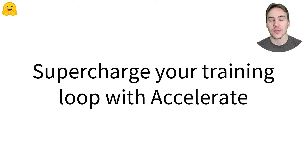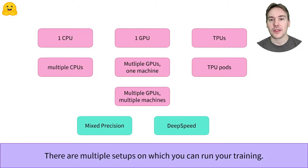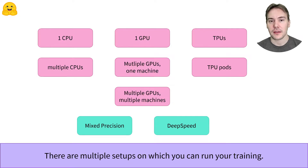Supercharge your PyTorch training loop with Hugging Face Accelerate. There are multiple setups on which you can run your training — it could be on CPUs, GPUs, TPUs, distributed on one machine with several devices, or even several machines, often called nodes, with multiple devices. On top of that, there are new tricks to make your training faster or more efficient, like Mixed Precision and DeepSpeed.